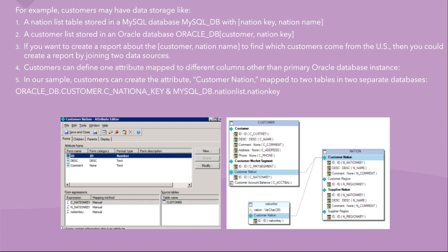If you look at the customer name attribute, it has an ID form, description form, and comment form. Under the customer nation ID form there are three expressions: c_nation_key coming from the customer table in Oracle, and n_nation_key coming from the SQL Server table. That's how you combine and bring data into one single source and leverage the functionality of Multi Sourcing in your project.